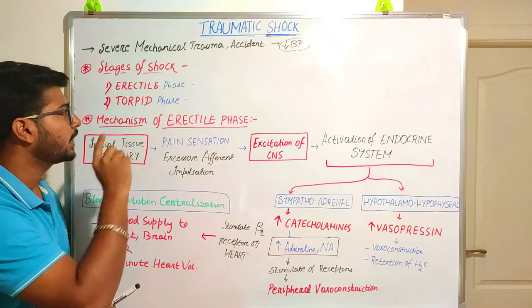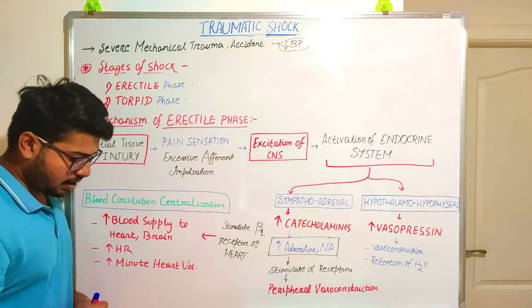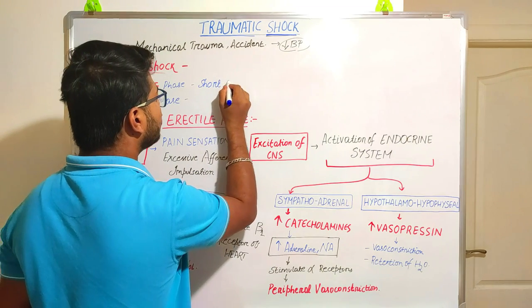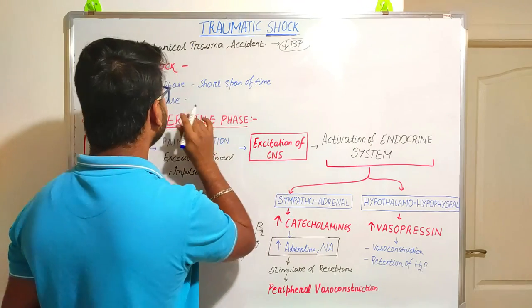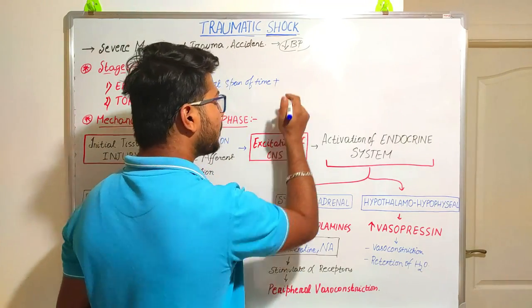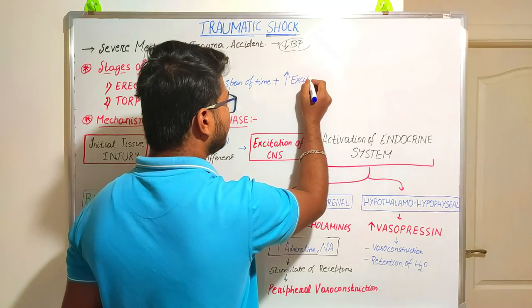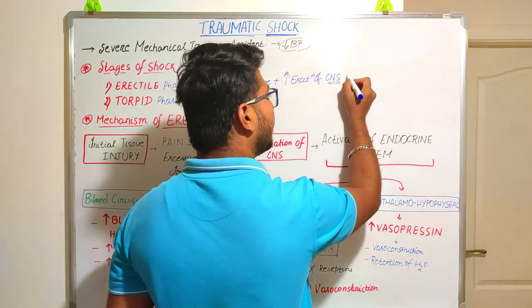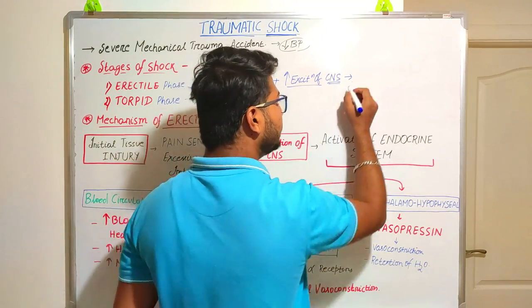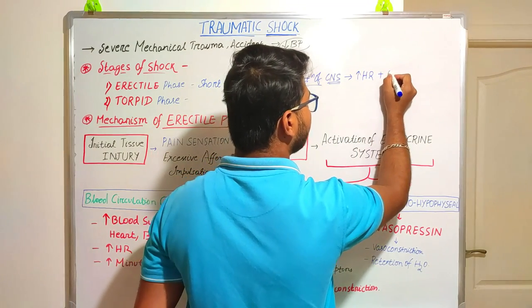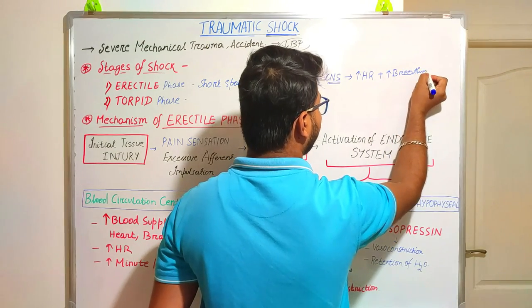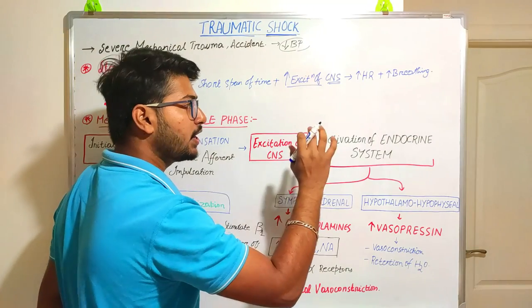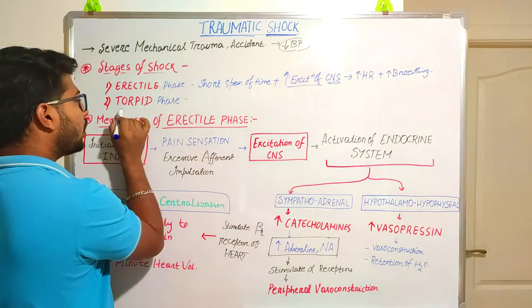In the stages of shock, the first stage is the erectile phase and the second stage is the torpid phase. The erectile phase is very short in duration. During that very short span, there will be excitation of the central nervous system, resulting in increasing heart rate and increasing breathing. This erectile phase is like the first situation where the cycle was moving very fast after the collision of the bus.